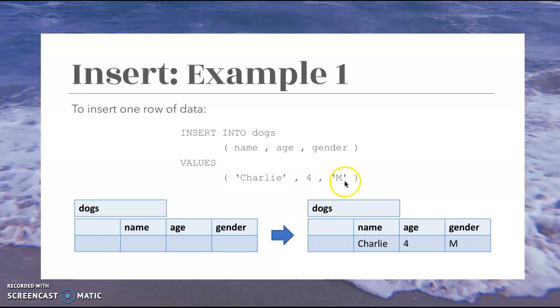So we have Charlie, and then four as the age, and M for gender. So those are the values being entered. And as you can see, this is the result. Enters Charlie into the name, four under age, and M under gender.